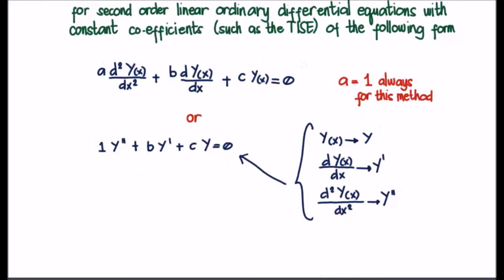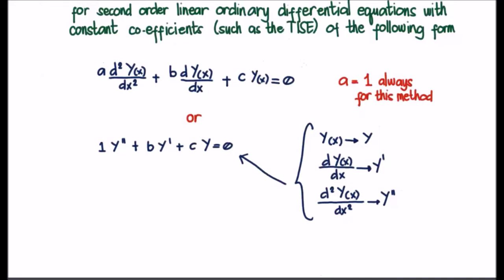And as I said the time independent Schrödinger equation is of this form. So how do we solve it? Well we solve what's known as the characteristic equation. And this is an equation in lambda. And lambda basically is a placeholder for the solutions to the differential equation. And this characteristic equation is in fact a quadratic equation.